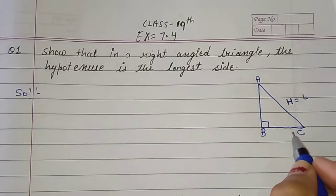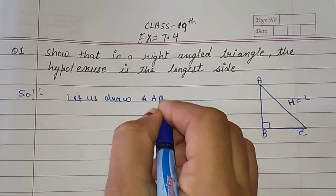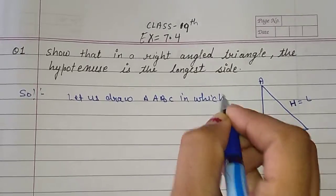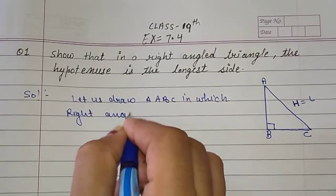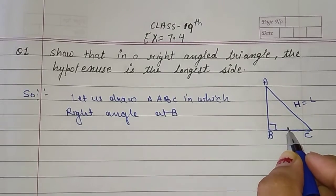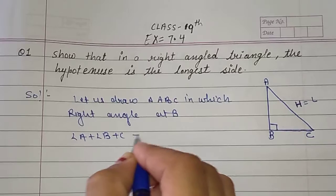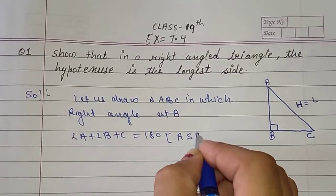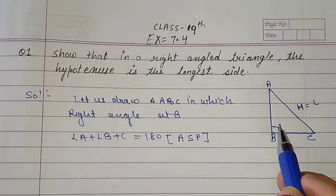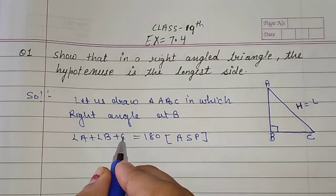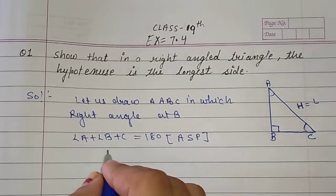First of all we have to draw — let's draw triangle ABC in which angle B equals 90 degrees. We have already drawn it. Now, angle A plus angle B plus angle C is equal to 180 degrees — by the angle sum property. The angle sum property means the sum of all angles of a triangle is equal to 180. We don't know angles A and C, but we know angle B is 90 degrees.